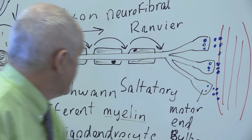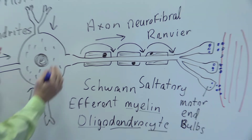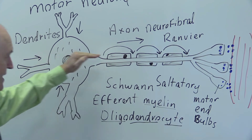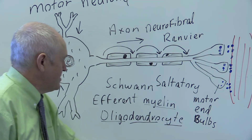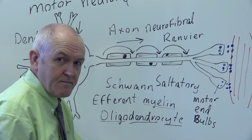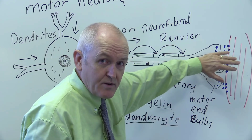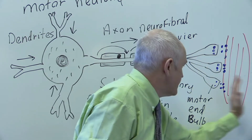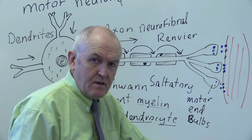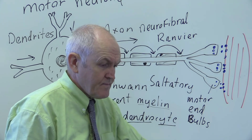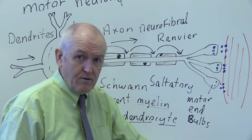So that's the essence of the motor neuron: the dendrites taking information in, the cell body, the axon protected by the myelin sheath made up of the Schwann cells, the motor end bulbs producing the chemical transmitter, going across the synapse to depolarize the muscle, to cause contraction. That's the motor neuron in basic outline.